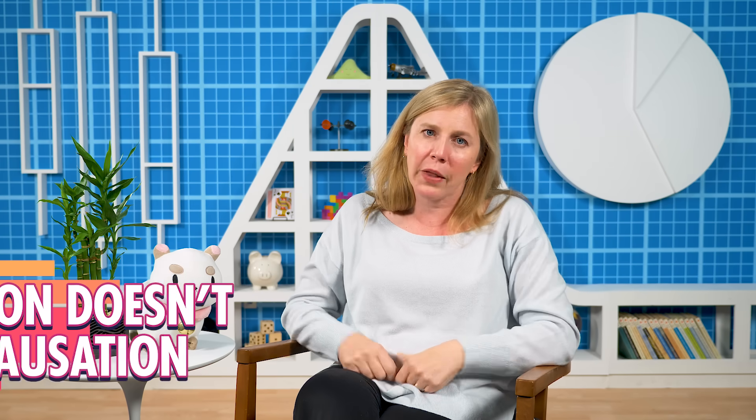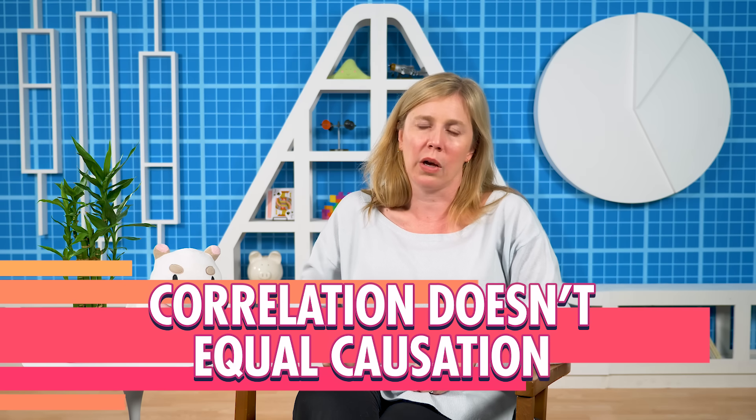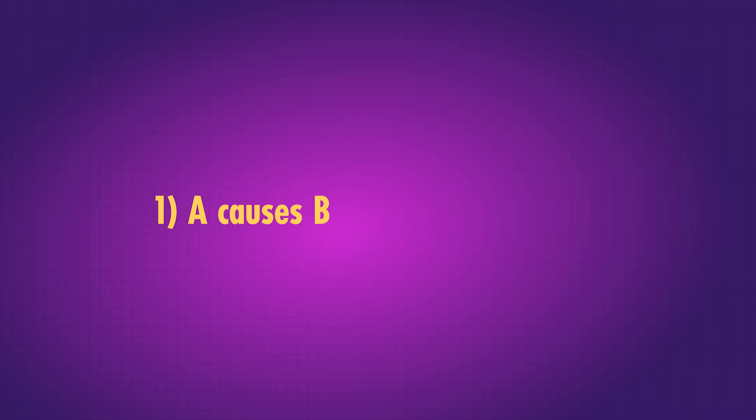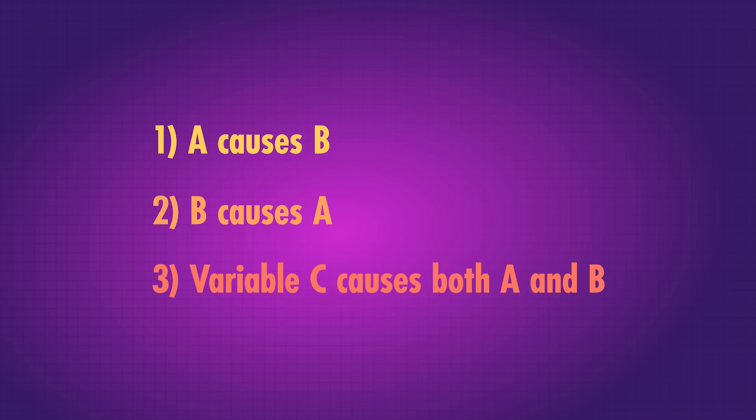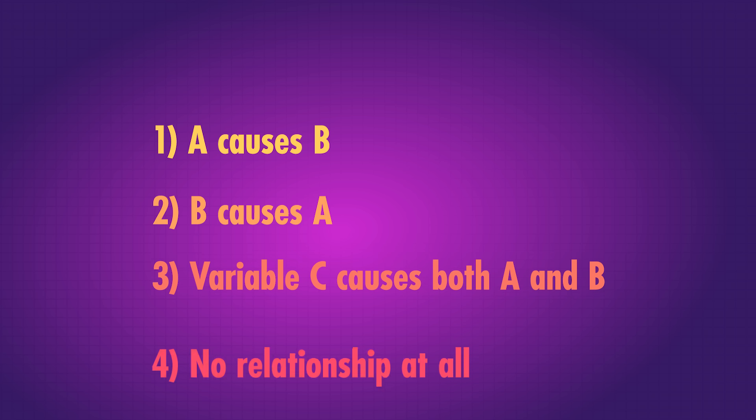The Cool Cage Act may seem silly, but we're constantly flooded with messages that equate correlation and causation. Correlation doesn't equal causation — just because two variables are related doesn't mean that one variable causes the other. When one thing, A, is correlated with another, B, there are a few possible reasons: A causes B, B causes A, there is a third variable C that causes both A and B even though A and B aren't related, or there's no relationship at all — it's just coincidence.